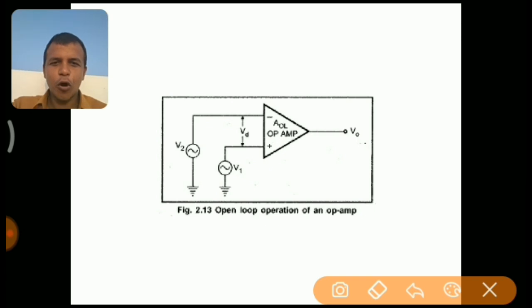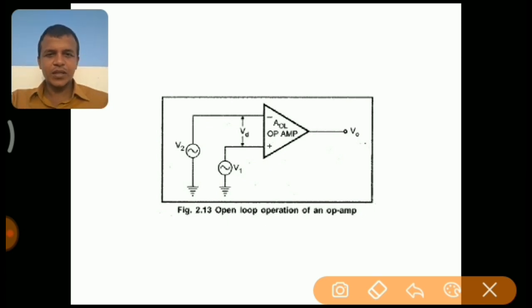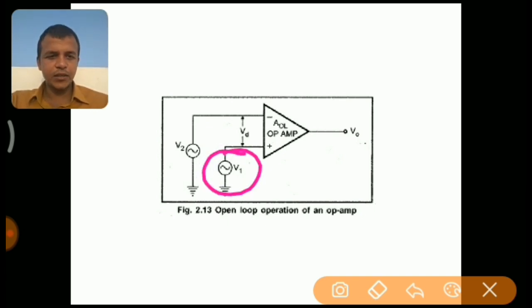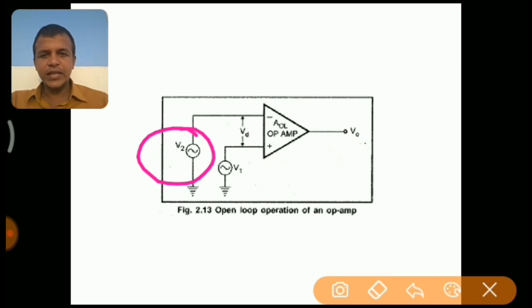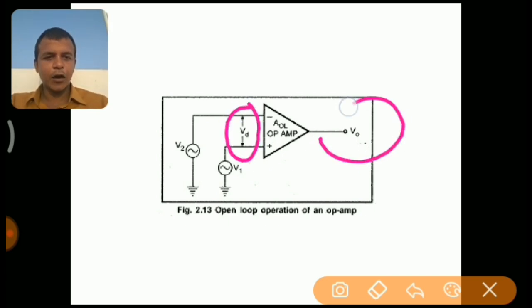This figure shows the operational amplifier in open loop mode. In open loop configuration, an operational amplifier amplifies the difference between the two input voltages and gives it as the output. The two input voltages are V1, which is given to the non-inverting terminal, and V2, which is fed to the inverting terminal. The difference between these two voltages is Vd, which is amplified and the output is V0.